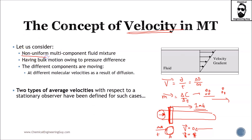Consider a non-uniform multi-component fluid mixture — a fluid with many components that is not uniform, having a bulk motion. Even if we say the bulk velocity is one meter per second, if you checked the velocities of all individual species, you would rarely see exactly one meter per second. We call it bulk or average velocity because it is what we observe and can measure easily. The different components are moving at different molecular velocities as a result of diffusion as well.